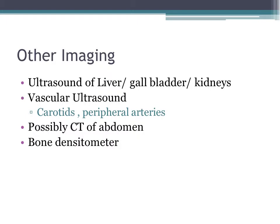As part of your evaluation, there will be a number of other imaging studies, including an ultrasound of your liver, gallbladder, and kidneys, vascular studies to determine whether you have hardening of the arteries in your carotids or lower extremities, possibly a CT of the abdomen, and bone densitometry to determine whether you have osteoporosis that would preclude transplant consideration.